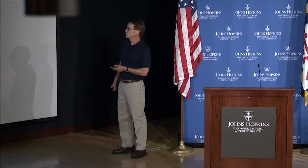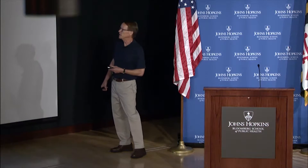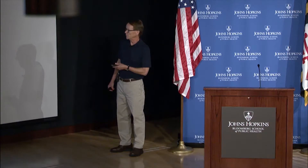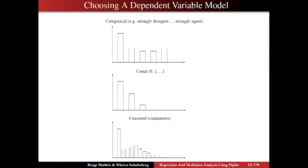You could try to apply a categorical variable model to count data, but it would be an inefficient way of handling the modeling. The count model has far fewer parameters — one or two — whereas the categorical variable model has at least four parameters. So the count model is already twice as parsimonious, but it has to be a real count.